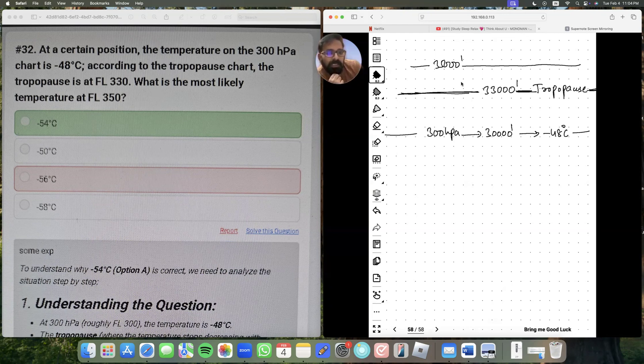The temperature doesn't fall. What do I mean by it? You all know from sea level, as you go up, the temperature falls at the rate of 2 degrees per 1000 feet. Approximately it's 1.97, let's say 2 degrees per 1000 feet. It will fall till tropopause.